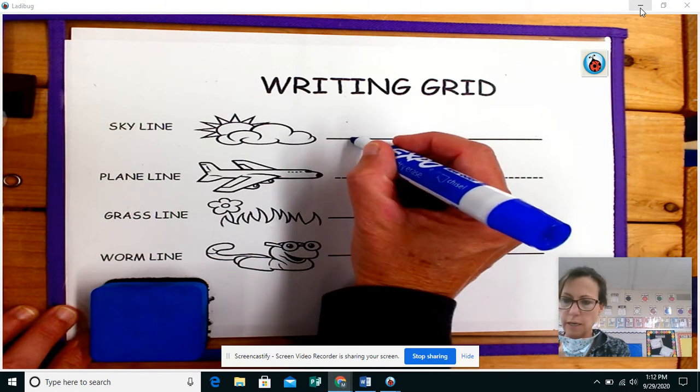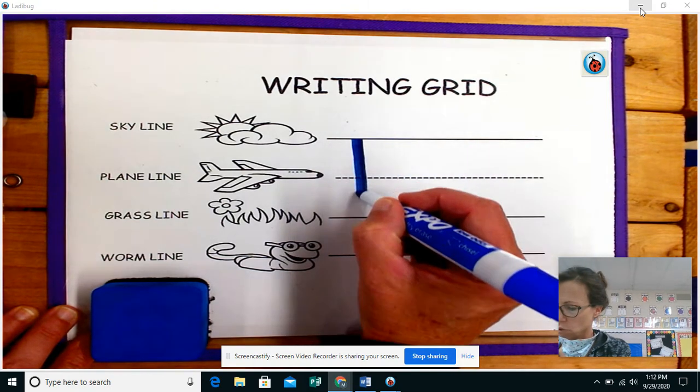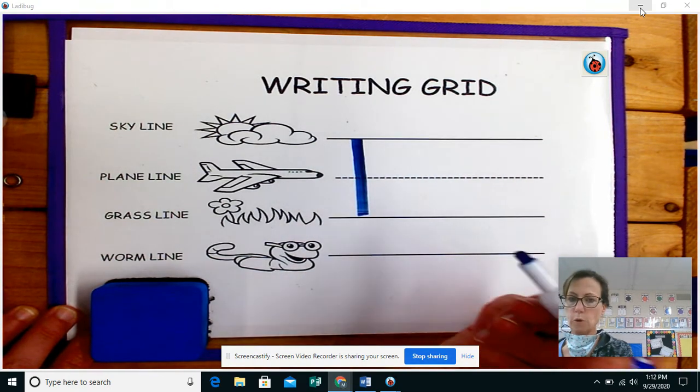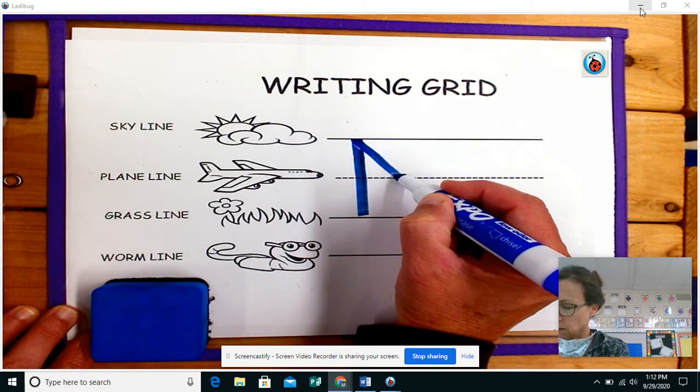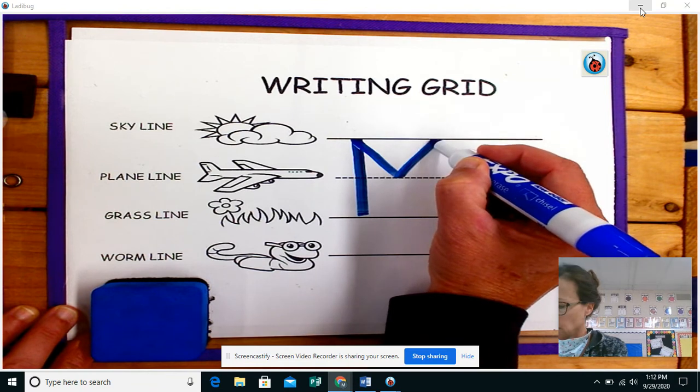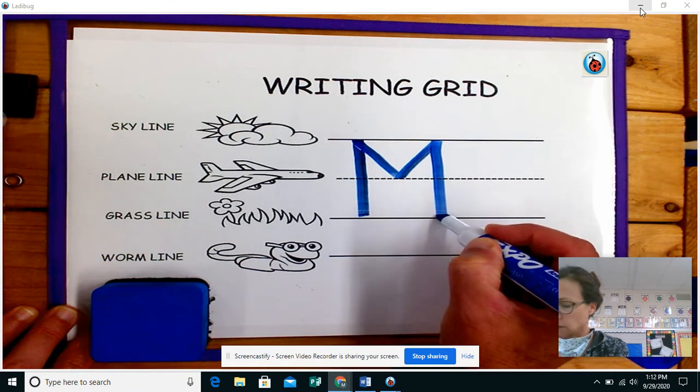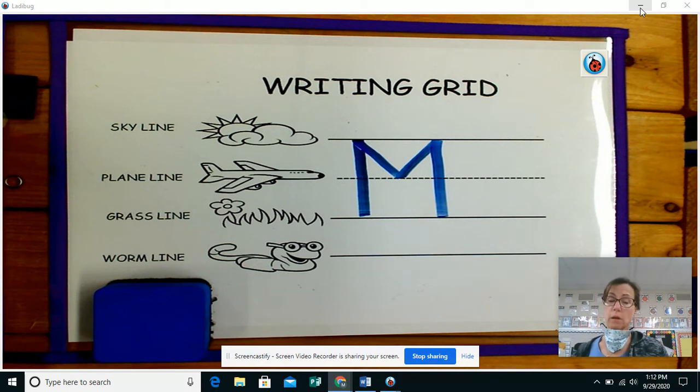We are going to start here, draw down to the grass line, pick up your marker, start on the skyline, go to the plain line, go back up and then draw a straight line down. That is how you draw the capital M. Remember, if yours doesn't look just like mine, it's okay. It probably won't. It's okay. Just keep practicing.